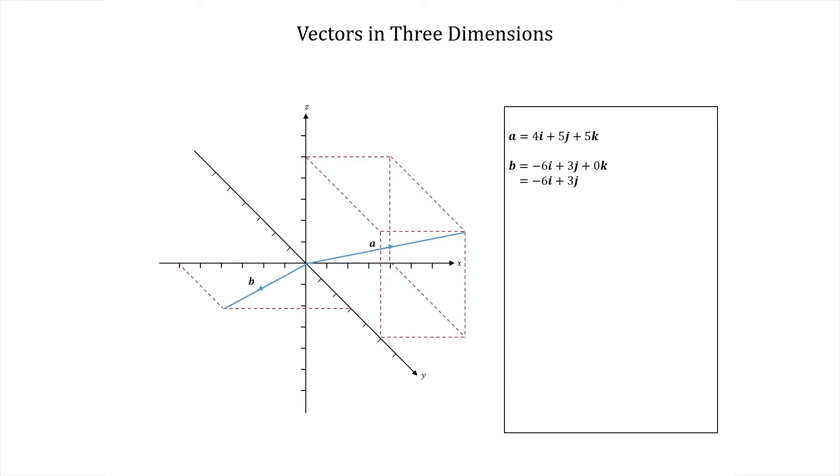Now, it would be very difficult to draw a plus b on our diagram, but to calculate it mathematically is easy. It's just 4 minus 6i plus 5 plus 3j plus 5 plus 0k, which equals minus 2i plus 8j plus 5k.